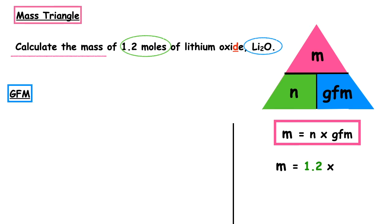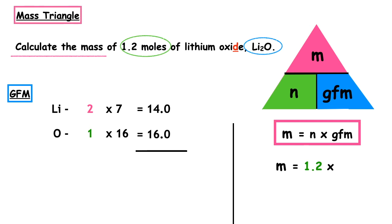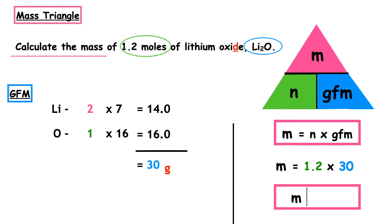For Li₂O: lithium — 2 × 7 = 14 (relative atomic mass found on page 7 of the data booklet); oxygen — 1 × 16 = 16. Adding these two numbers gives a GFM of 30 g/mol. Substituting into the formula: mass = 1.2 × 30 = 36 grams.